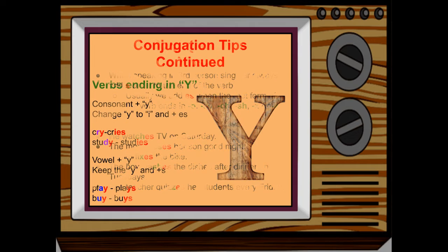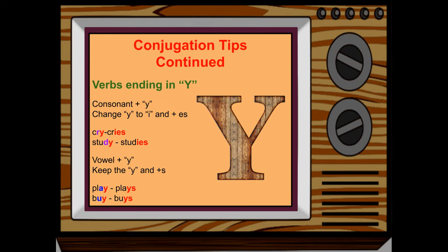One more conjugation tip is all about Y. When we have a verb ending with Y and we need to apply the third person S or ES, there are a few tricks. If it is a consonant plus Y, change the Y to an I and add ES. For example, cry becomes cries; study becomes studies. But when it is a vowel plus Y, keep the Y and just add S — play becomes plays; buy becomes buys.